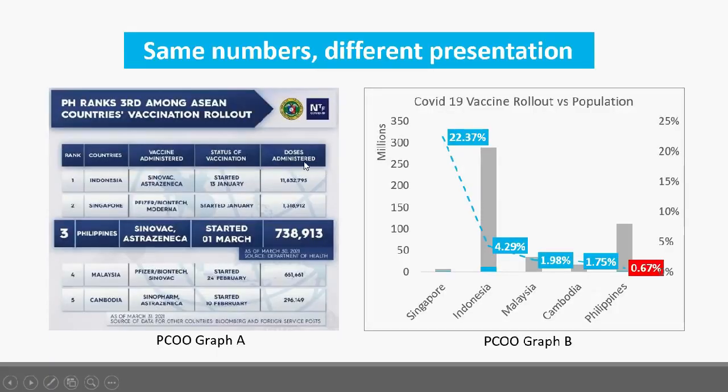Yung graph A is actually another example of cherry picking kasi meron mga nakatagong context yung data na contradictory sa konklusyon. Infographics are amazing tools for data. Pero more than yung nakikita mo, kailangan isipin mo: meron bang nakatago? Meron bang ayaw sabihin, ayaw ipakita sa data? Kasi baka mas mahalaga yung nakatago kesa yung nakikita mo.